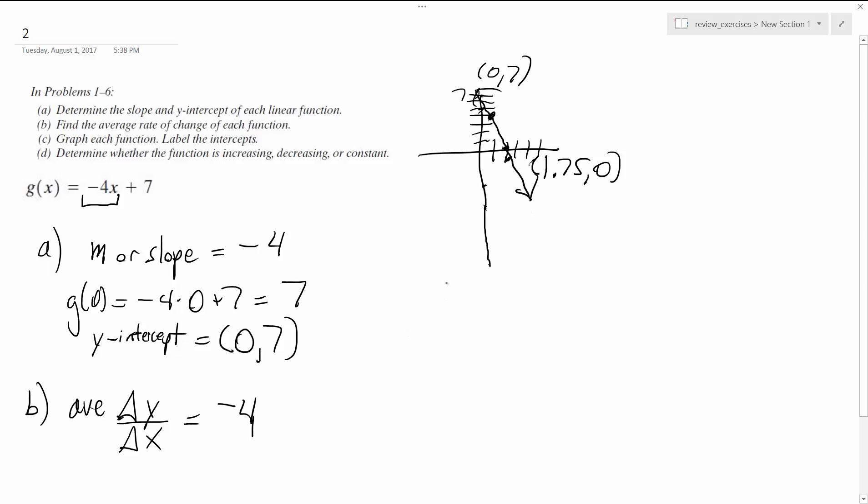Alright, so the final part is going to be d, which determines if the function is increasing or decreasing. We go from left to right, so in this case, negative 4x plus 7 is decreasing.